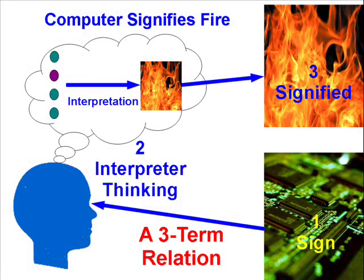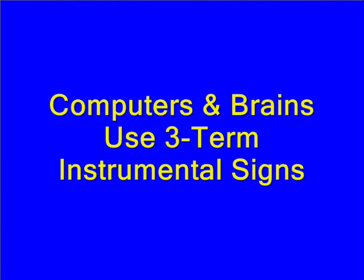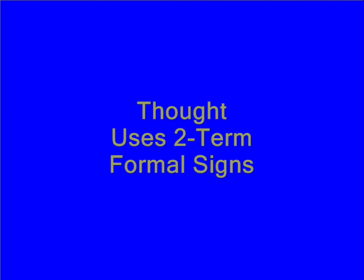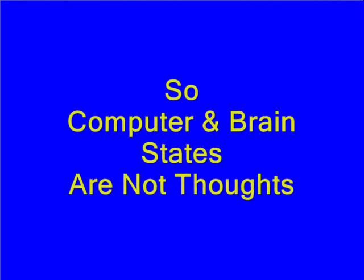So thoughts are a completely different kind of sign than external signs. When computers represent some data, they do so by means of external signs that require a human interpreter. The same is true of brain states — if a neurosurgeon is looking at the brain and finds a particular circuit representing some thought or idea, he has to interpret that circuit in his own mind before it can signify anything. Since computer states and brain states don't signify things in the same way as thoughts, they are not thoughts, and computers and brains by themselves don't think — they process data.